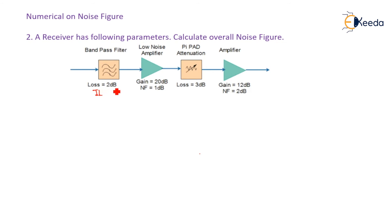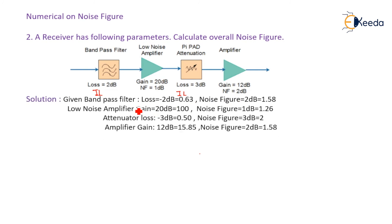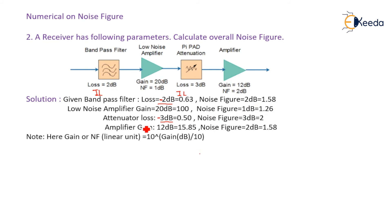There is also a low noise amplifier with a gain of 20 dB and noise factor of 1 dB, and a Pi-pad attenuator which also gives insertion loss. For the bandpass filter and attenuator losses, we consider those values with a minus sign because they are losses. The noise figure is 2 dB. We evaluate all values in linear units using: linear value = 10^(gain in dB / 10).